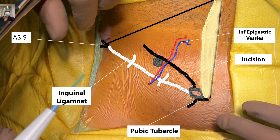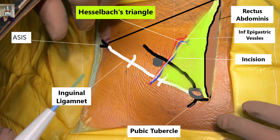Regarding Hesselbach's triangle — important for every surgery trainee — its boundaries are: medially, the lateral border of rectus abdominis (linea semilunaris); laterally, the inferior epigastric vessels; and inferiorly, the inguinal ligament. If the hernia lies within Hesselbach's triangle — medial to the inferior epigastric vessels — it is a direct inguinal hernia. If it is lateral to the inferior epigastric vessels, beyond the triangle boundary, it is an indirect inguinal hernia. If the hernia sac appears below the pubic tubercle or below the inguinal ligament, suspect femoral hernia. All relevant anatomy will be demonstrated during live surgery.